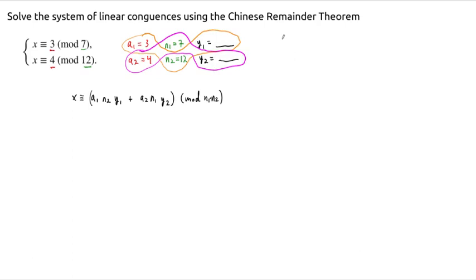Recall that the y1 and y2 are the inverses of these things with respect to the other one. So the idea here is that y1 times capital N1 should be congruent to 1 mod n1. What is this capital N1? This is the notation of the general Chinese Remainder Theorem.